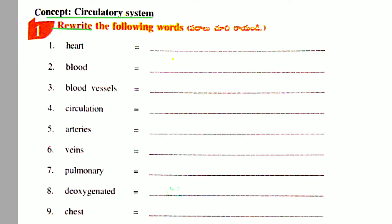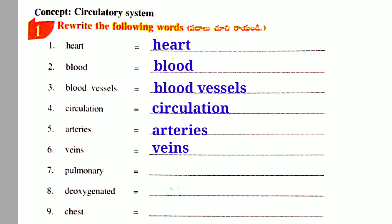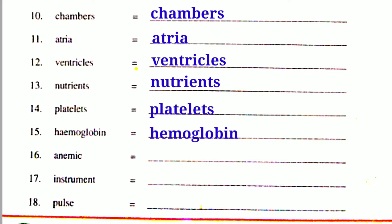First activity: Rewrite the following words. Heart, blood, blood vessels, circulation, arteries, veins, pulmonary, deoxygenated, chest, chambers, atria, ventricles, nutrients, platelets, hemoglobin, anemic, instrument, pulse.